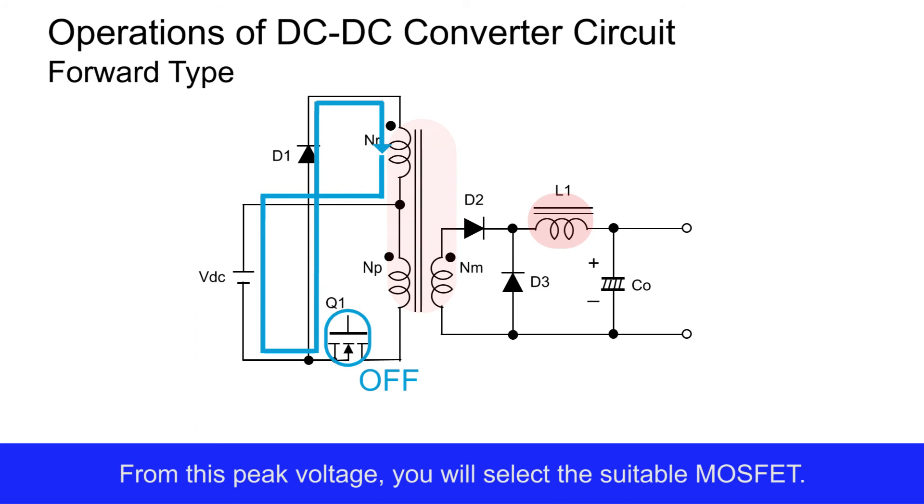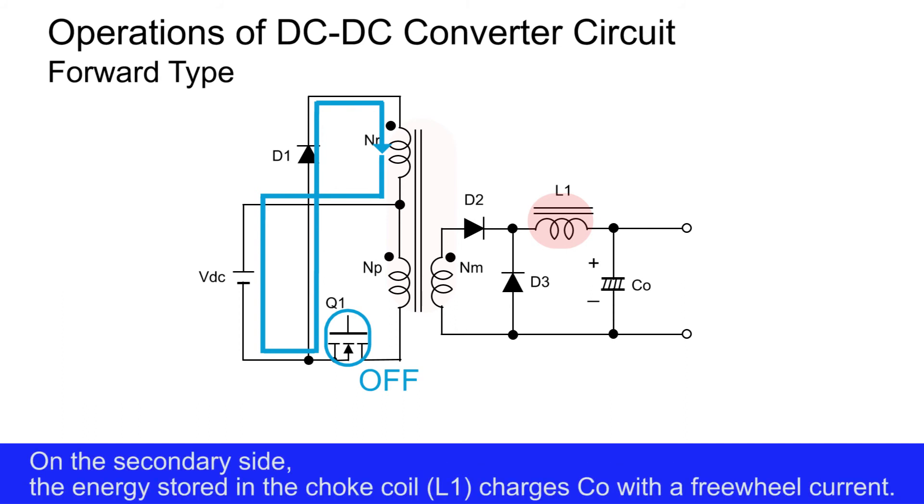The stored energy must be fully released through this path. On the secondary side, the energy stored in the choke coil L1 charges CO with the freewheel current.